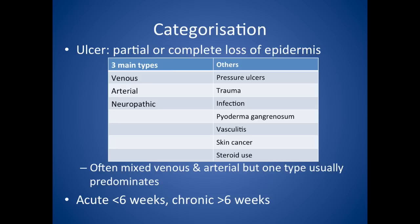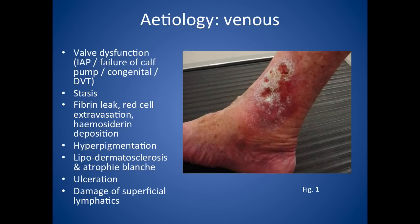You can also categorise leg ulcers according to acute or chronic. Acute would be an ulcer that's been there for less than six weeks, and chronic is one which has been there for over six weeks. Now let's look at the different etiologies, starting with venous.